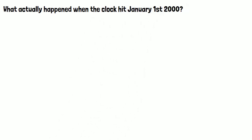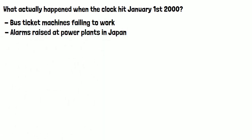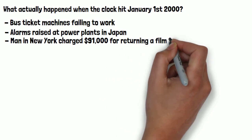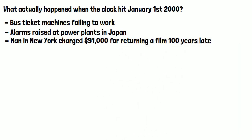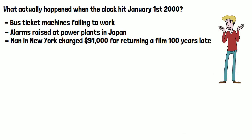So what actually happened when the clock hit January 1st, 2000? Well, in short, not much. There were a few reports of bus ticket machines failing to work and a couple of cases of alarms being raised at power plants in Japan. In New York, a man was charged $91,000 after a computer at a film rental shop calculated that the film he was returning was 100 years overdue — but this was quickly refunded. However, nothing like what had been predicted did end up happening.